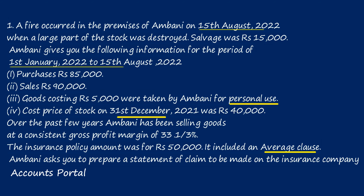Ambani is following the calendar year — January to December. The year started 1st January 2022 and the date of fire is 15th August 2022. So we prepare the memorandum trading account from 1st January 2022 to 15th August 2022. Goods costing ₹5,000 were taken by Ambani for personal use. Whenever goods are withdrawn by the owner, we deduct at cost price, not selling price. The general entry is: Drawings account debit, Purchases account credit.